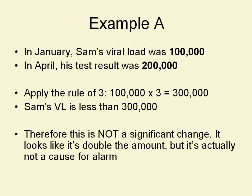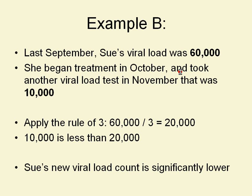Here's Example A. In January, Sam gets a viral load test and his result is 100,000. And in April, four months later, his test result is 200,000. So in real numbers, his viral load doubled. But we want to apply the Rule of Three: 100,000 times three equals 300,000. His new viral load test result is less than 300,000. So actually, this does not count as a statistically significant change. It looks like double the amount, but it's actually not cause for alarm.